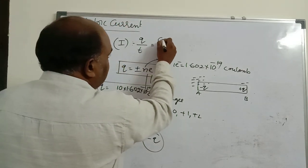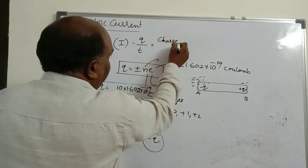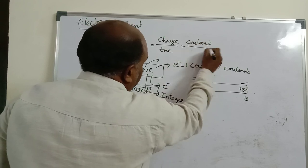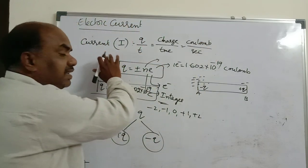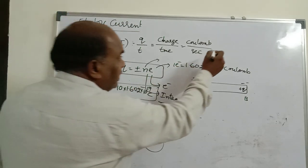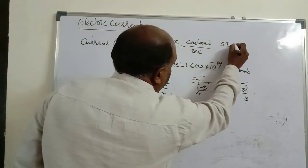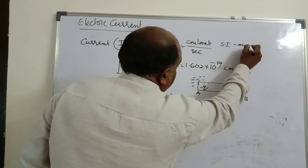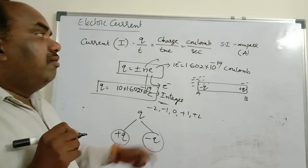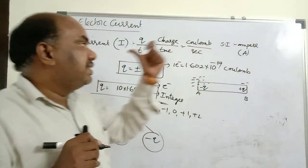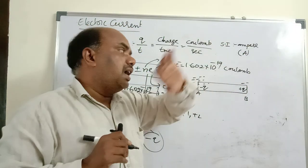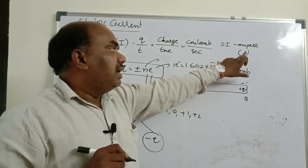Current equals charge divided by time. Charge unit is coulomb, time unit is second, so coulomb per second is the formula-based unit of current. But the SI unit is ampere. Ampere is named after a scientist — whenever a scientist's name is used as a unit, write all small letters, or only the first letter as capital.